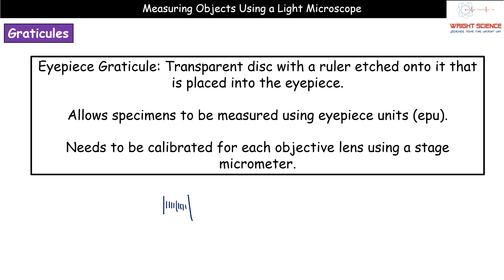Because that's in the eyepiece we are going to find that how many of these little units actually correspond to a particular measurement depends on which objective lens we have. So before we can do any measurements here we need to carry out what's called calibration for each of the objective lenses using that second part, the stage micrometer.